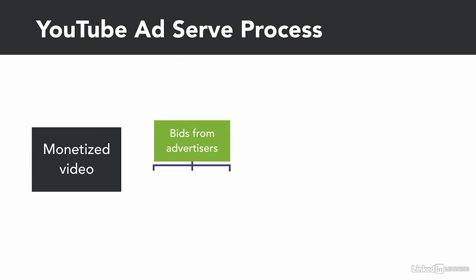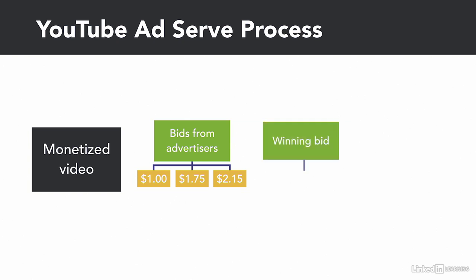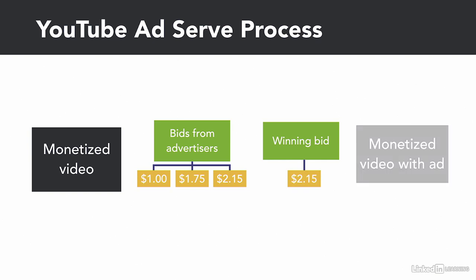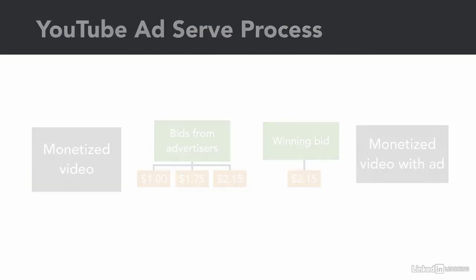Let's say we have three bids: one for $1, one for $1.75, and one for $2.15. The one that is the highest will be considered the winning bid, so in this example it would be the $2.15 bid. Once it's determined which bid has won, the ad will then display on your video, and you'll earn about 55% of the revenue that YouTube generates from that advertisement.